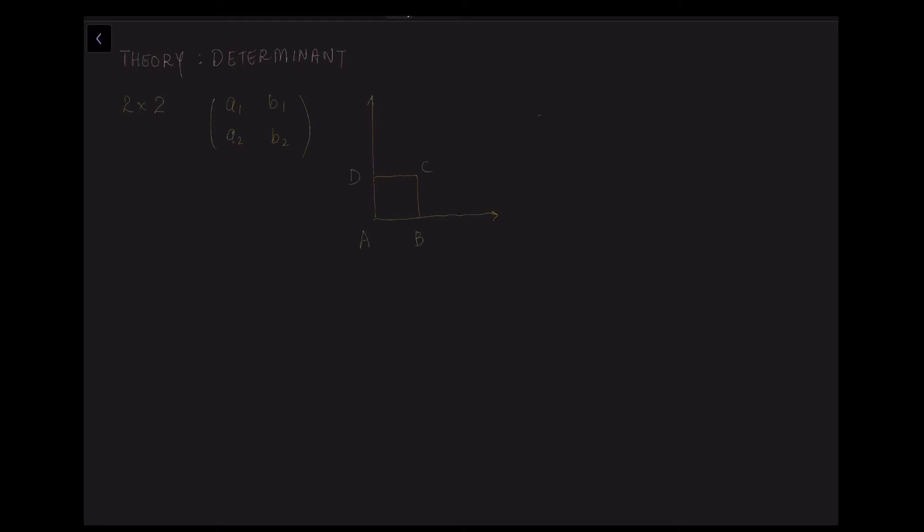The matrix A1, A2, B1, B2 transforms the square into a parallelogram with new coordinates of A prime, B prime, C prime and D prime. So we know that the coordinates of A is 0, 0, B is 1, 0, C is 1, 1 and D is 0, 1.